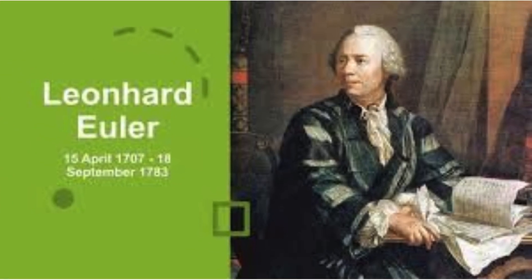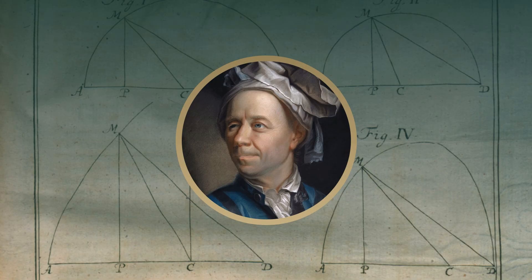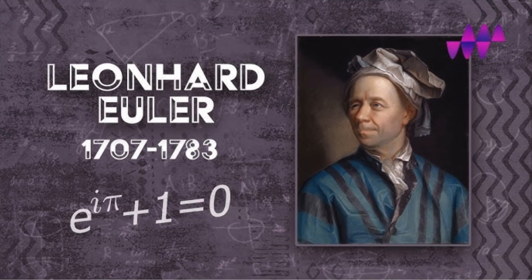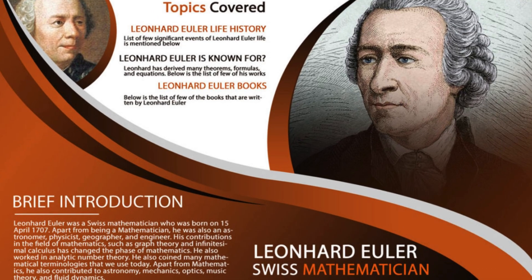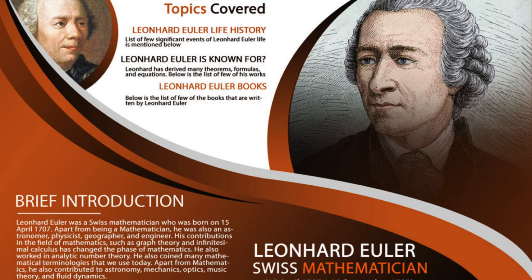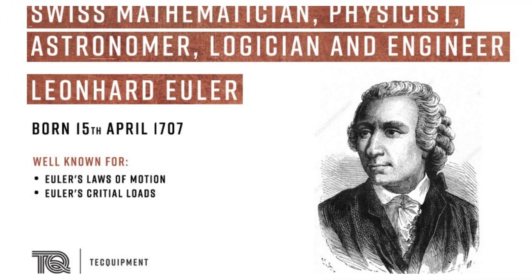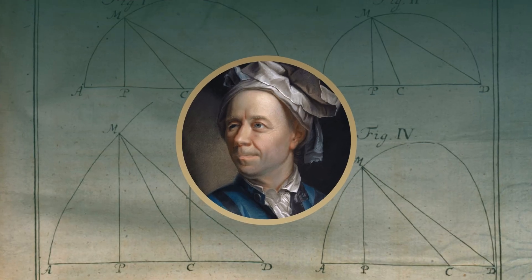Topology: Euler developed the Euler characteristic, V minus E plus F, a key idea in topology, which studies shapes and spaces and is used today in computer graphics and biology. Astronomy and Optics: He wrote extensively on light, vision, and the motion of planets, contributing both practical and theoretical insights that guided scientists for generations. Teaching and Writing: Despite losing his eyesight later in life, Euler wrote more than 800 books and papers, making mathematics accessible and inspiring generations of students and scientists.